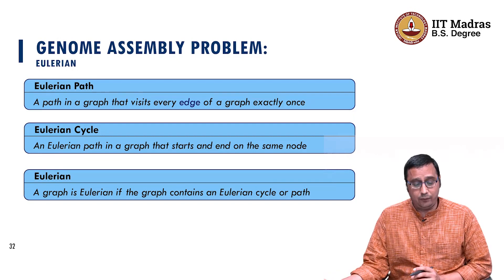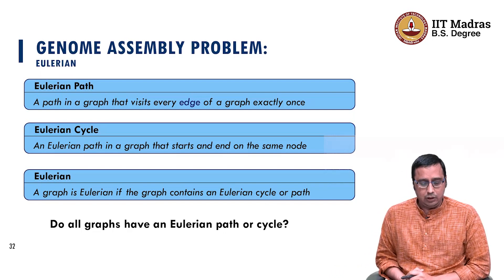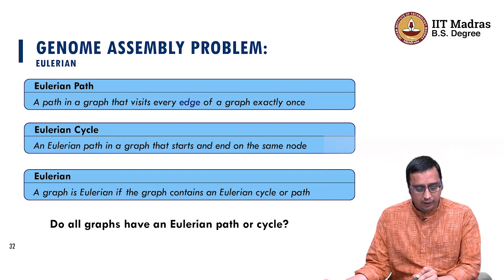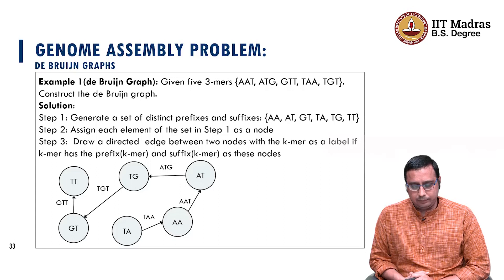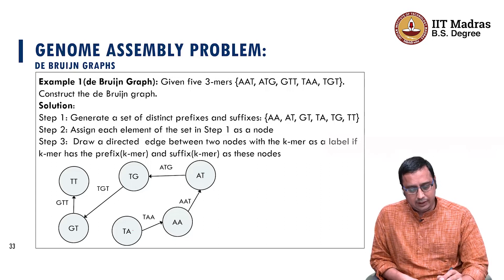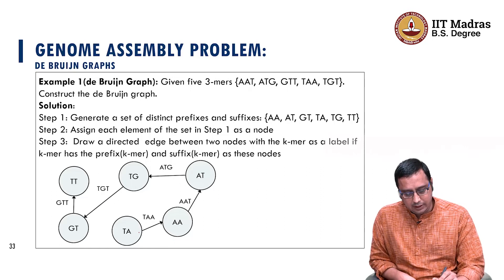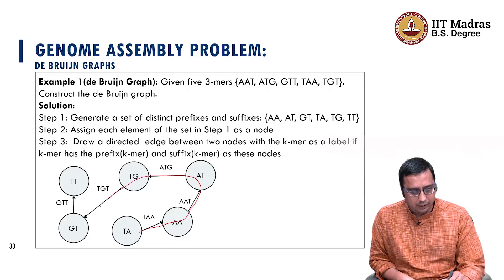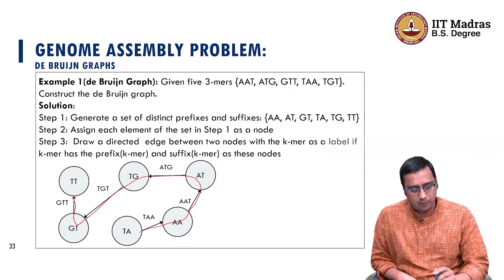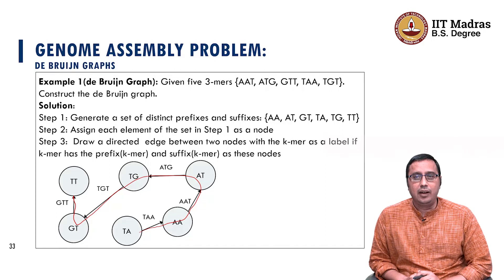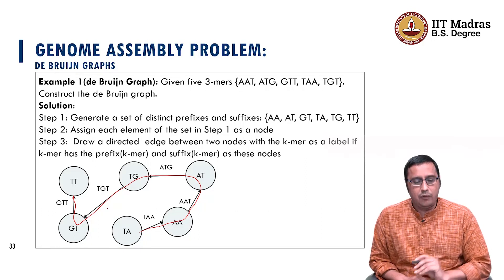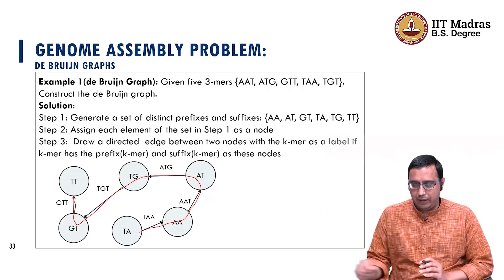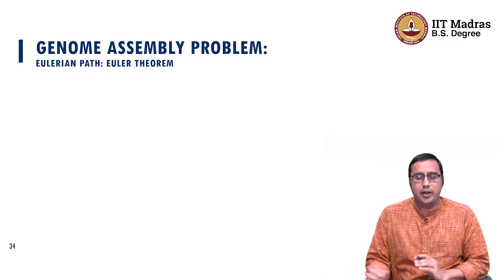Now, the question is whether all graphs we construct have an Eulerian path or cycle. That is where we explore the idea of the De Bruijn path. Looking at the De Bruijn graph for example one, we realize there is indeed an Eulerian path — we can visit each edge once from node TA to TT and obtain a path. So this graph has an Eulerian path; however, there is no cycle. We will keep that thought and come back to the concept of the Eulerian path and Euler's theorem.